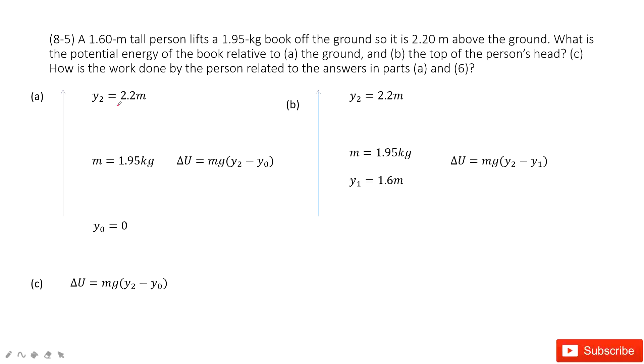The first one asks you to find the potential energy of the book relative to the ground. If we choose the reference point as the ground, the distance above the ground is y2, so we can find the potential energy is mg(y2 - y0).